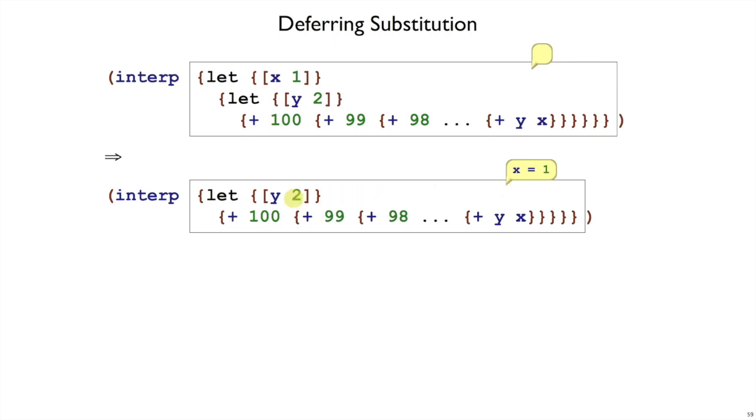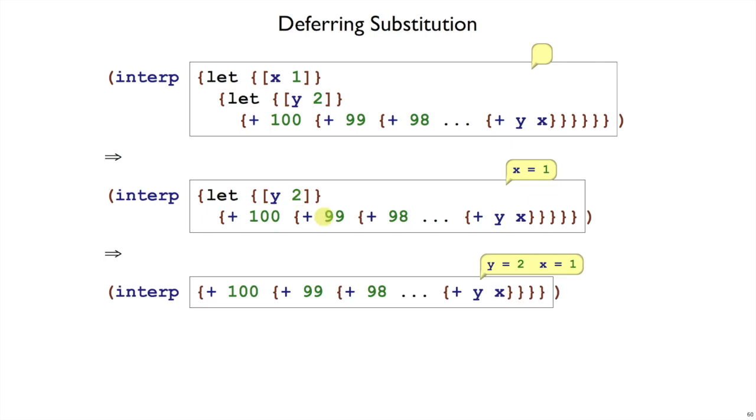And then when I want to replace y by 2, I do the same thing. I add to my bubble to say we've got the body expression now, and remember that whenever you see y, that was supposed to be replaced by 2, and x was supposed to be replaced by 1.